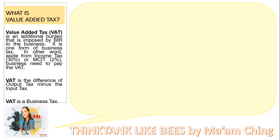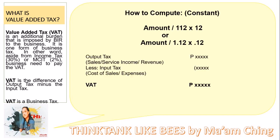What is the difference of output tax minus the input tax? A value-added tax is a business tax. How to compute? Value-added tax is constant. We have: amount divided by 112 times 12, or amount divided by 1.12 times 0.12. Because this is constant, you can also compute it for your output tax and for your input tax.